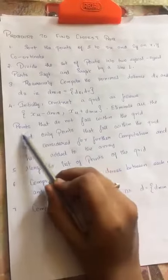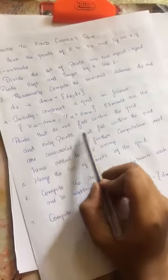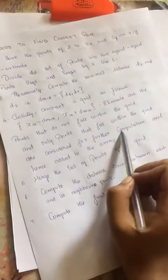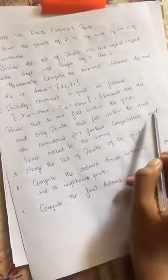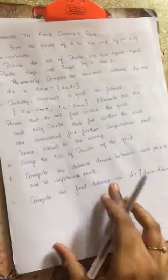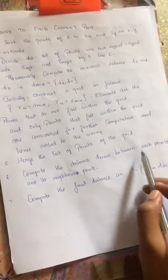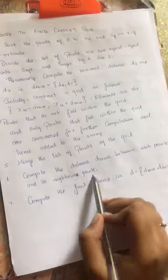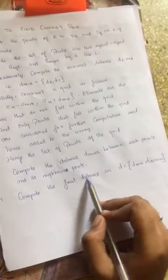Now eliminate all the points that do not fall within the grid. Only the points that fall within the grid are considered for the computation and hence added to the array. Now we have to merge the points in the grid and compute the distance d across between each point and the neighboring points.